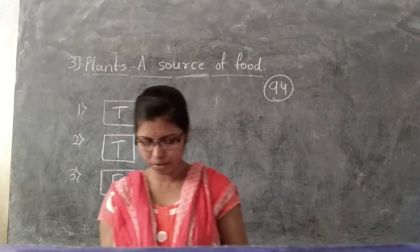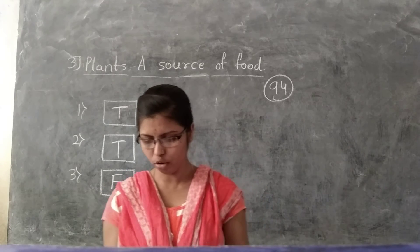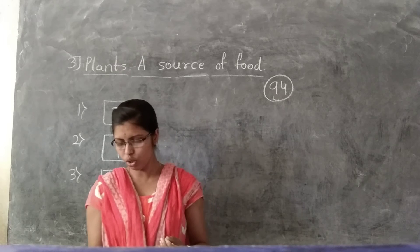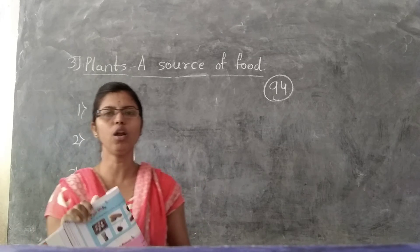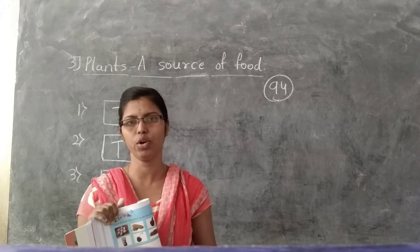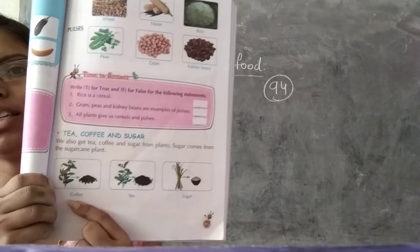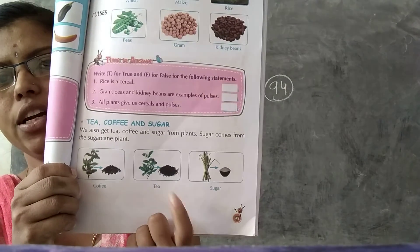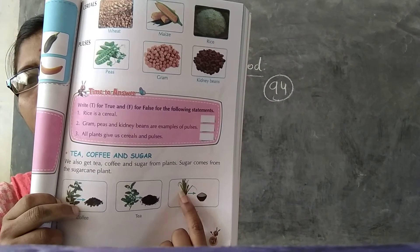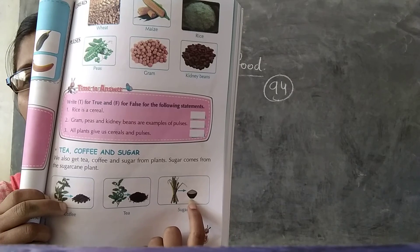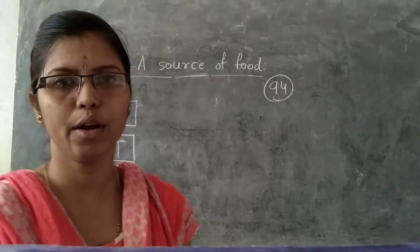Next topic is tea, coffee, and sugar. We also get tea, coffee, and sugar from plants. Sugar comes from the sugar cane plant. See the pictures — there is a coffee plant, a tea plant, and sugar cane shown here.